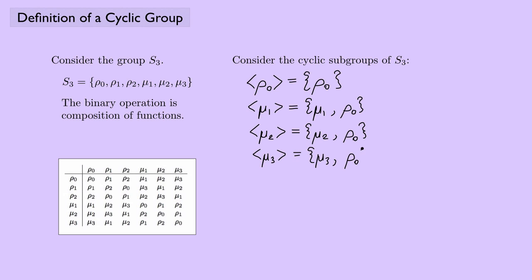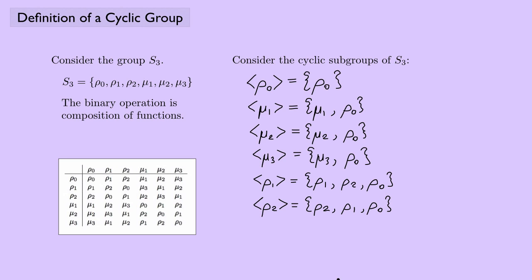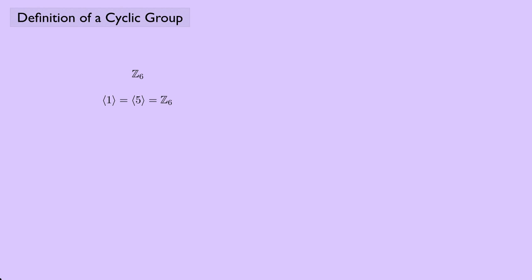What about the rotations? For rho 1, rho 1 composed with rho 1 gives rho 2 from the group table. Then rho 2 composed with rho 1 gives back the identity. A similar thing happens with rho 2: rho 2 composed with rho 2 gives rho 1, and rho 1 composed with rho 2 gives the identity. Notice that none of these cyclic subgroups are the entire group S3 — no single element generates the entire group. So Z6 is cyclic, generated by 1 and 5, while S3 is not cyclic.